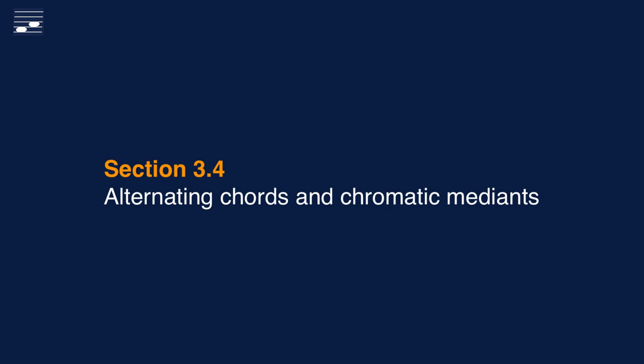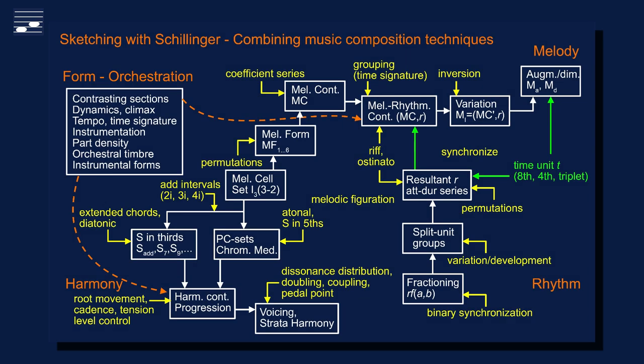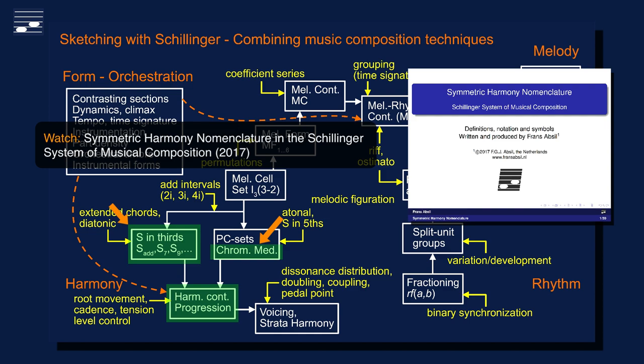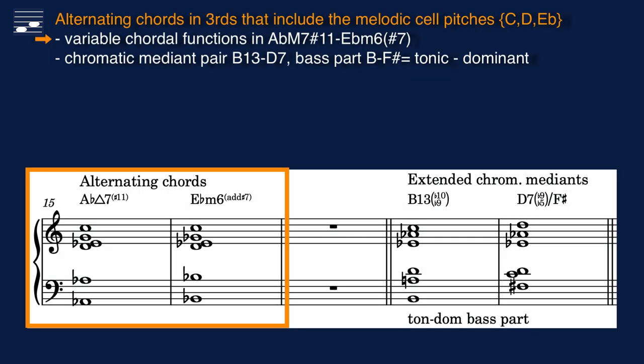What else can we do with the extended chords in thirds? Here are two further options: alternating chords and chromatic medians. These can be found in two process blocks in the techniques overview diagram. Strictly speaking, chromatic medians are not part of the diatonic branch in the harmony domain — in the Schillinger system you would find these in the symmetric harmony system. This is an example of a set of alternating chords where the melodic cell pitches have different chordal functions. Alternating between A-flat major 7 sharp-11 and inversion position E-flat minor 6 with sharp 7 yields almost full overlap in the four-part upper layer and stepwise motion in the bass.